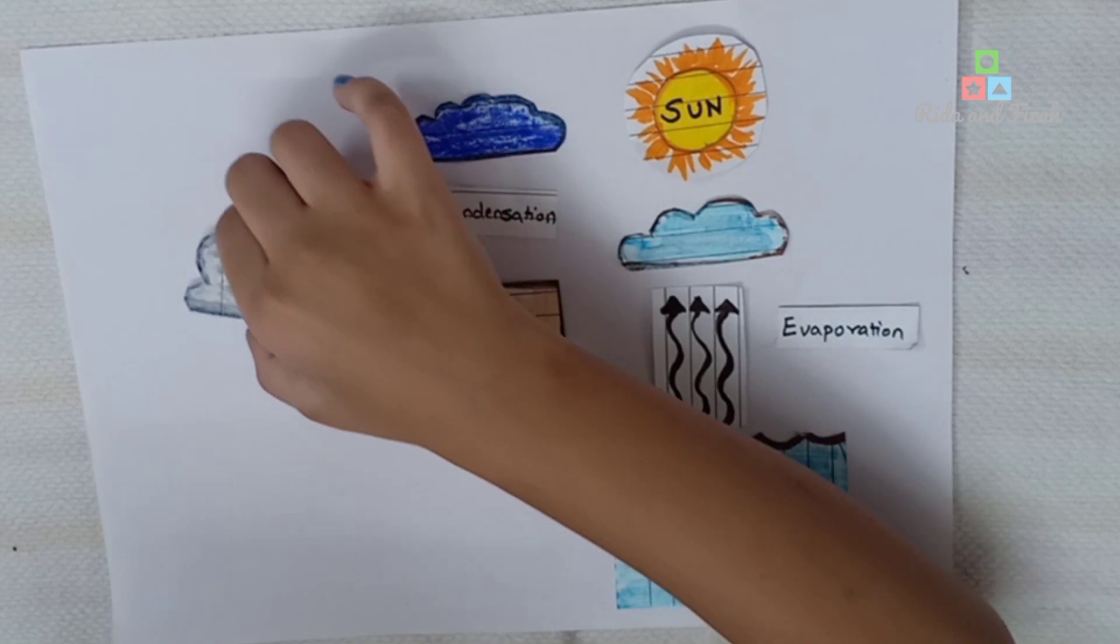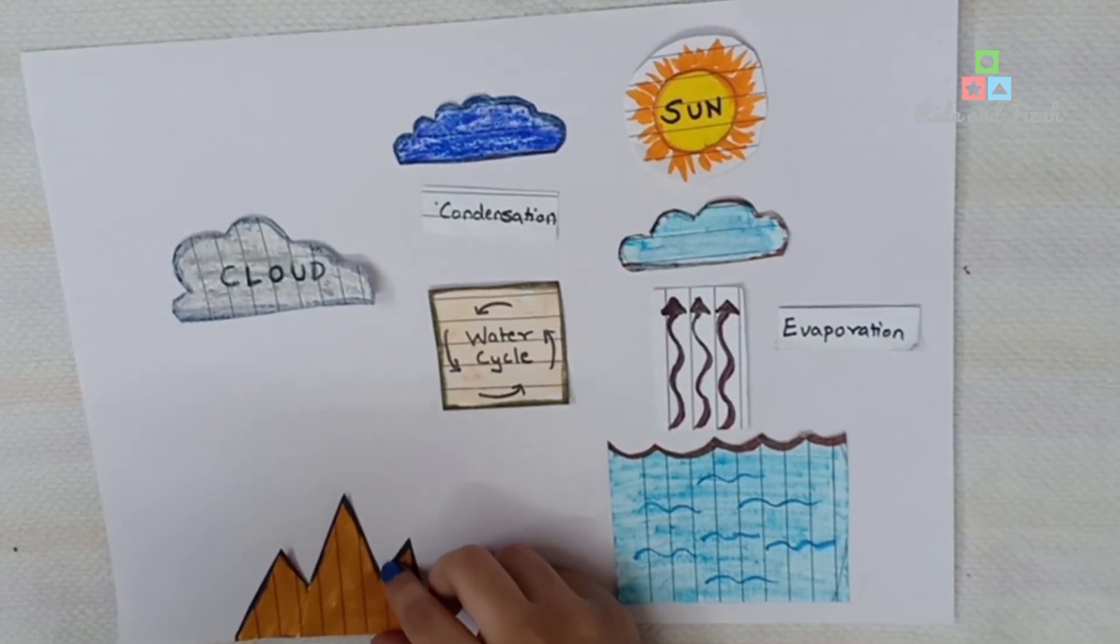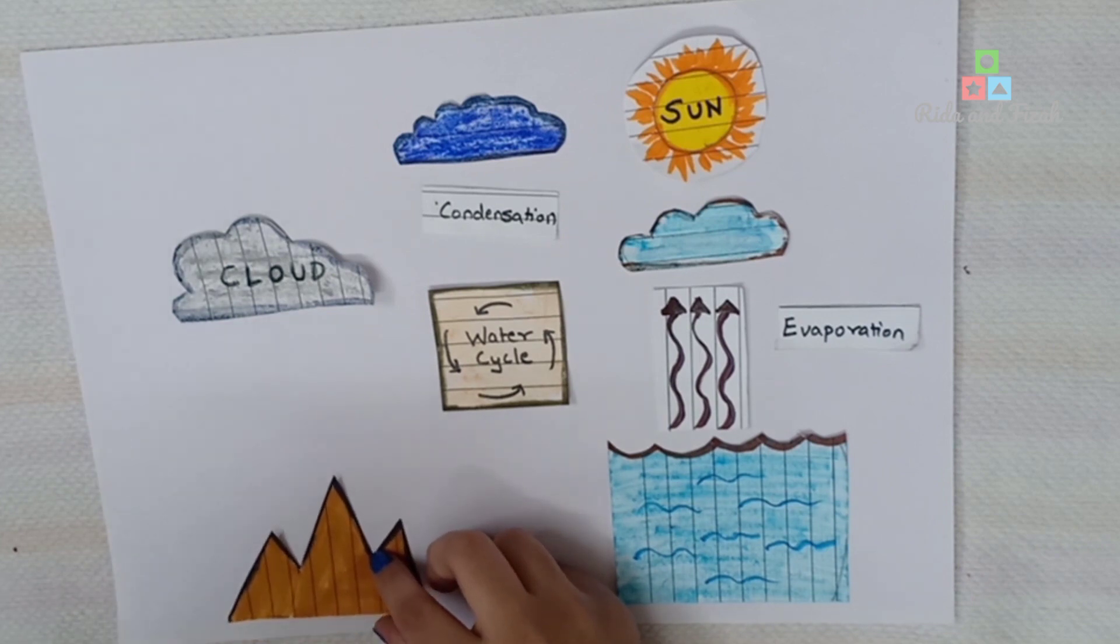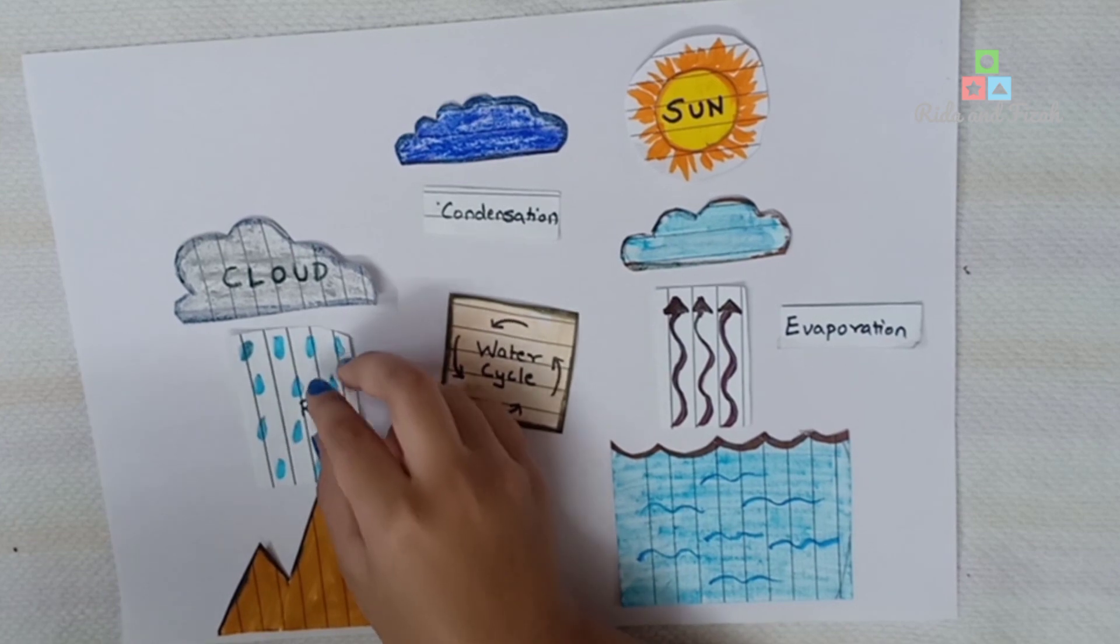The clouds become heavier and come down in the form of rain. This process is called precipitation.